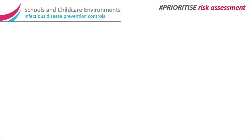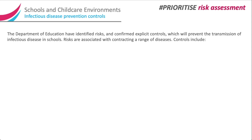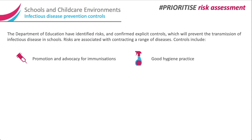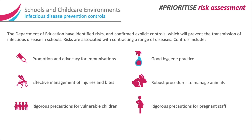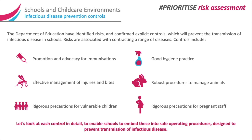Infectious Disease Prevention Controls. The Department of Education have identified risks and confirmed explicit controls which will prevent the transmission of infectious disease in schools. Risks are associated with contracting a range of diseases. Controls include: promotion and advocacy for immunisations, good hygiene practice, effective management of injuries and bites, robust procedures to manage animals, rigorous precautions for vulnerable children, and rigorous precautions for pregnant staff. Let's look at each control in detail to enable schools to embed these into safe operating procedures designed to prevent transmission of infectious disease.